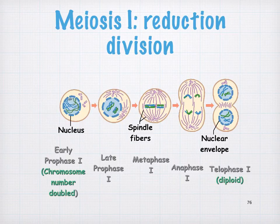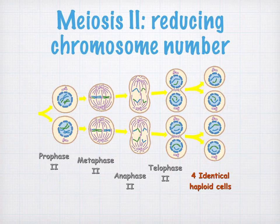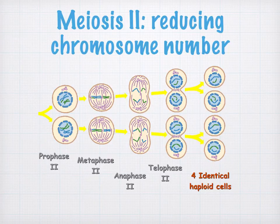There are four stages in meiosis: prophase I, metaphase I, anaphase I, and telophase I. In meiosis II, you've also got four stages: prophase, metaphase, anaphase, and telophase. At the end of meiosis II, there are four cells called a tetrad, and these are haploid.